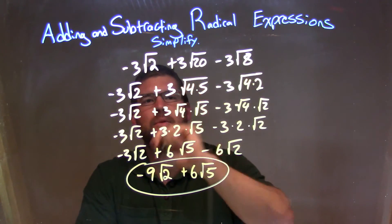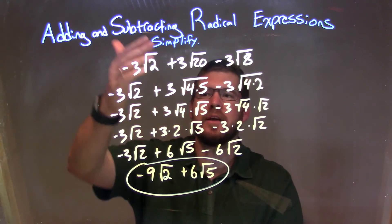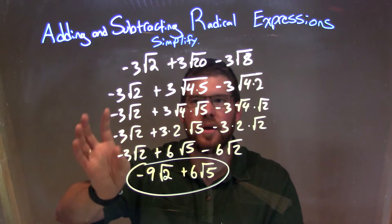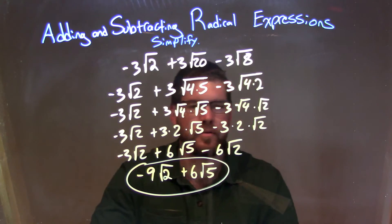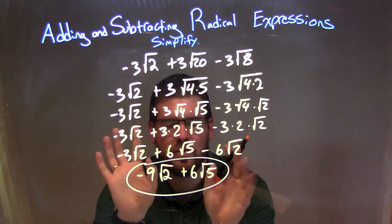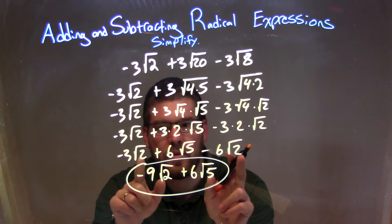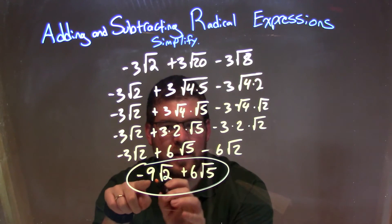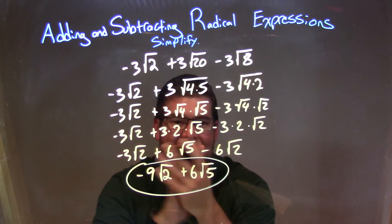So let's recap. We were given negative 3 times the square root of 2, plus 3 times the square root of 20, minus 3 square root of 8. I broke down each one of my square roots as much as I could, and simplified, giving me negative 3 times the square root of 2, plus 6 times the square root of 5, minus 6 square root of 2. Then I combined the terms with the same square root of 2 — negative 3 and minus 6 give negative 9. So we get negative 9 square root of 2 plus 6 square root of 5, and that is my final answer.